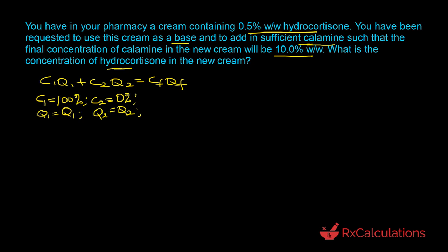For the final concentration, we've been told in the question that it is 10%, and QF is the quantity of the final product which is not given, so we keep it as QF. It's important to note that QF equals Q1 plus Q2, and we will use this expression as we continue with our solution. Now we can go ahead and substitute this information into the equation.